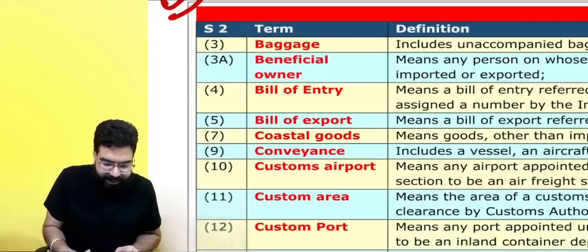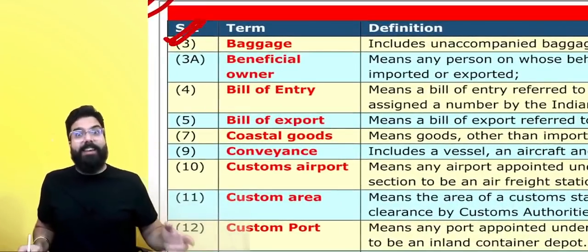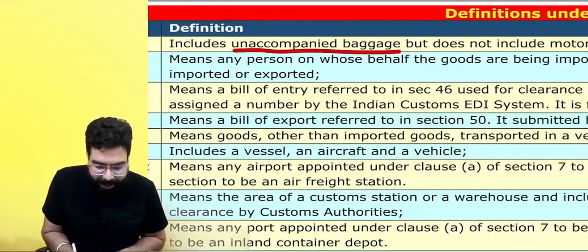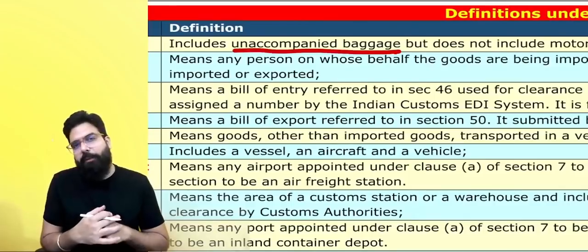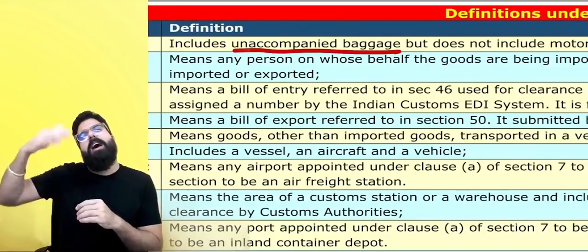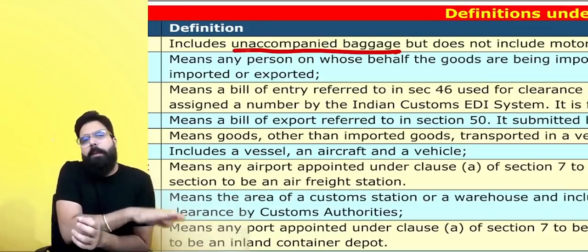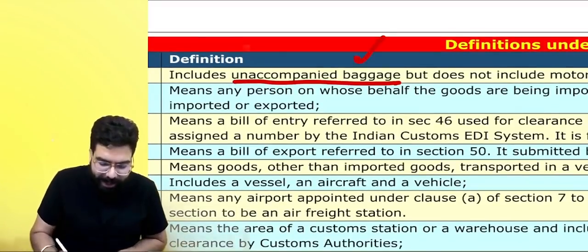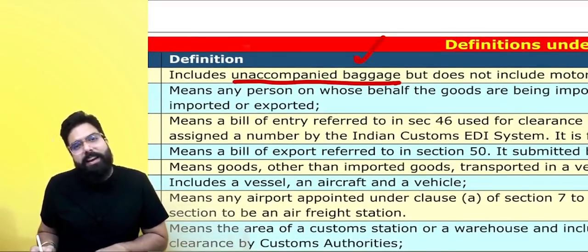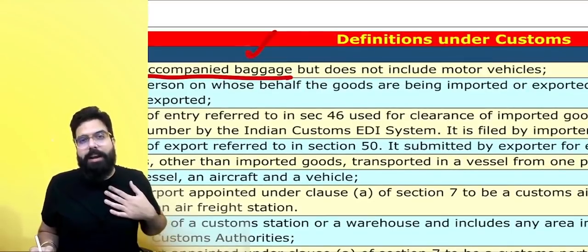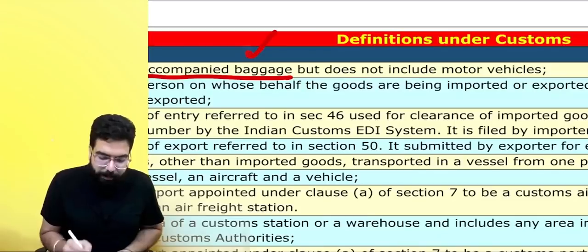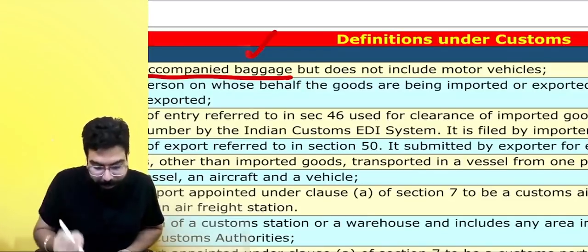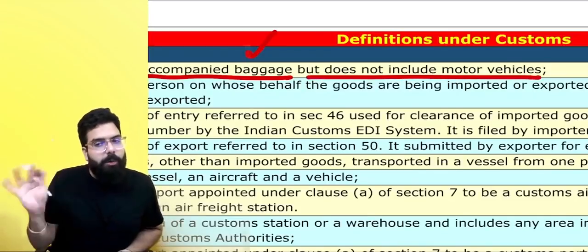The first definition talks about baggage. Baggage includes unaccompanied baggage. So if you are coming from outside India and your bag arrives before or after you, that unaccompanied baggage is also considered baggage — baggage provisions will be applicable. However, it does not include motor vehicles. Motor vehicles are not baggage.